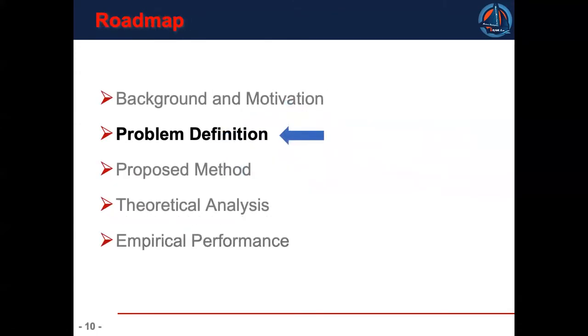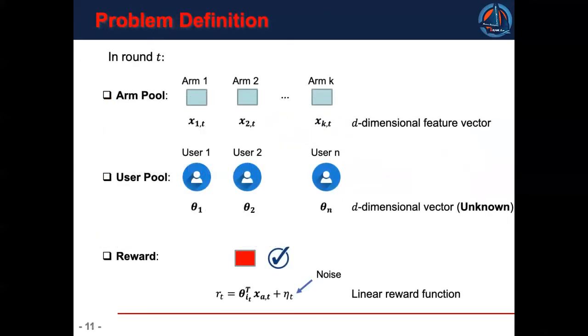Next, we will give the formal problem definition. In contextual multi-arm bandit, each arm is represented by a feature vector forming the arm pool, and each user is represented by an unknown vector which we call user parameter forming the user pool. And the reward is assumed to be a linear function of the user parameter and arm feature vector.